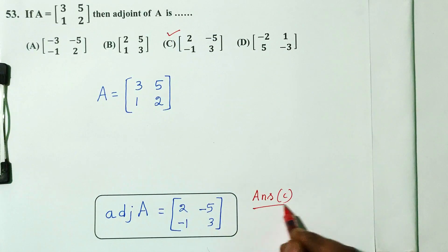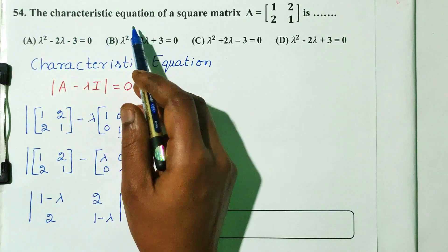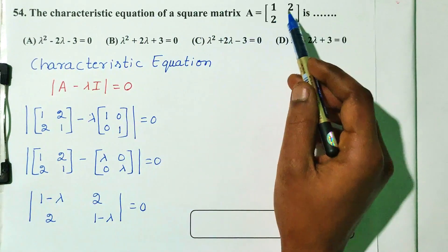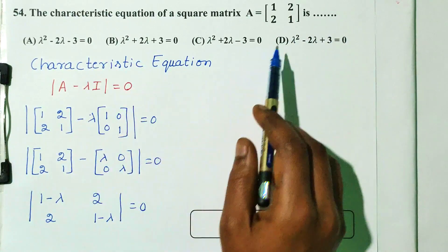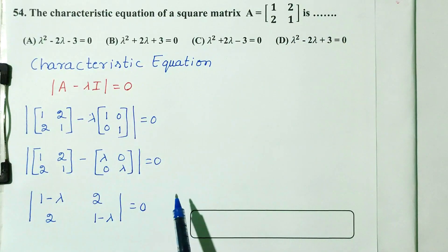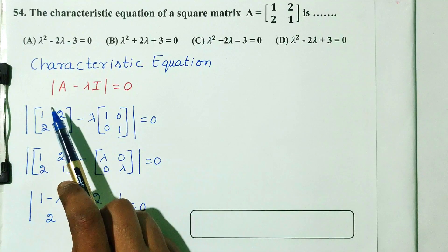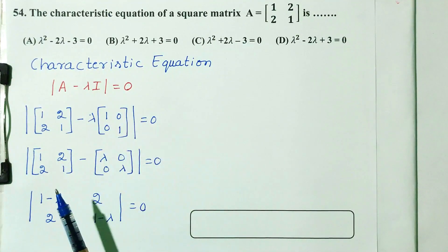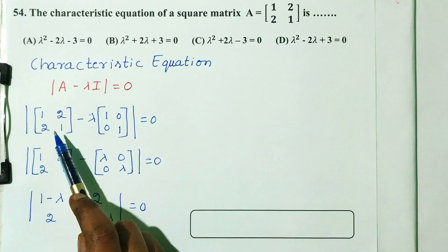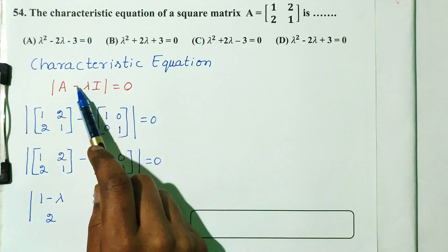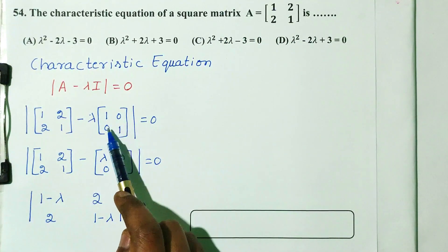Question number 54. The characteristic equation of the square matrix A equal to: 1, 2, 1, 1 — find the options. The formula for the characteristic equation is: determinant of (A minus lambda I) is equal to 0.